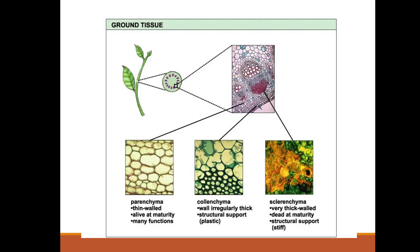All of this is made up of ground tissue. Parenchyma is thin-walled, alive at maturity, and provides many functions. Collenchyma has irregularly thick walls that provide structural support. And sclerenchyma has very thick walls and is dead at maturity, also providing structural support.